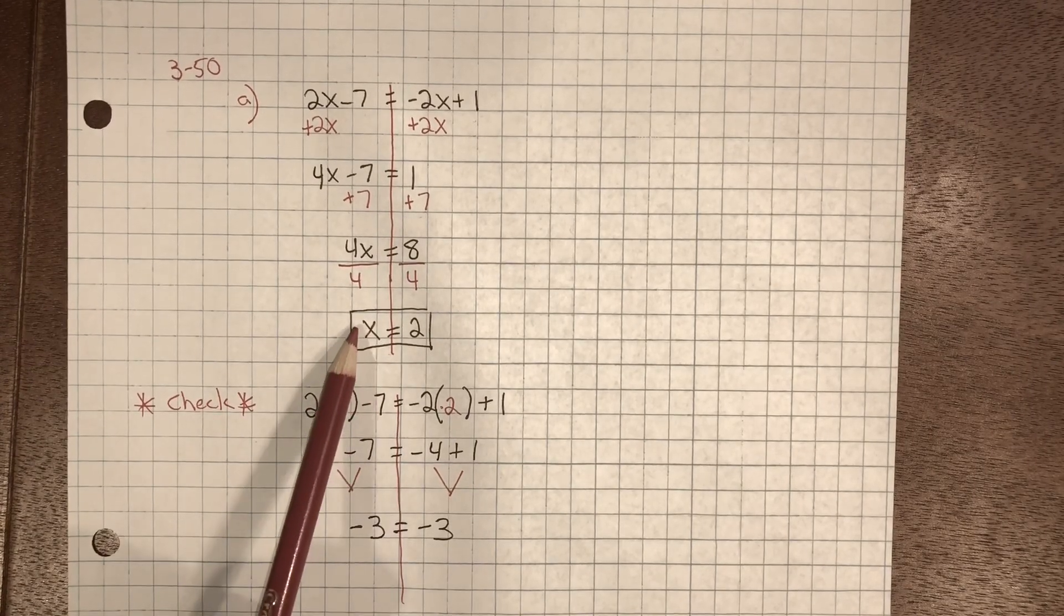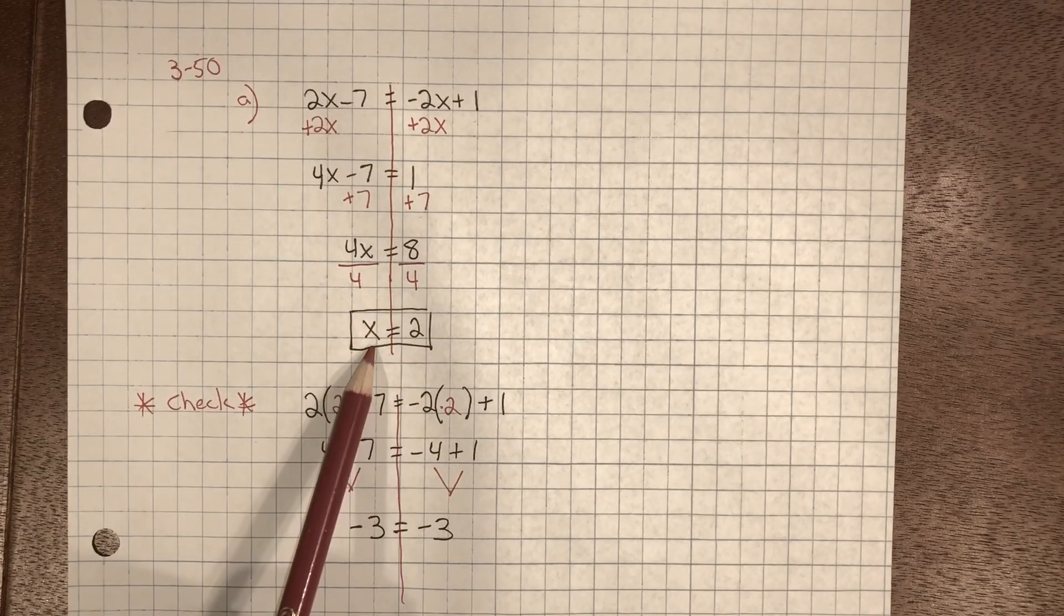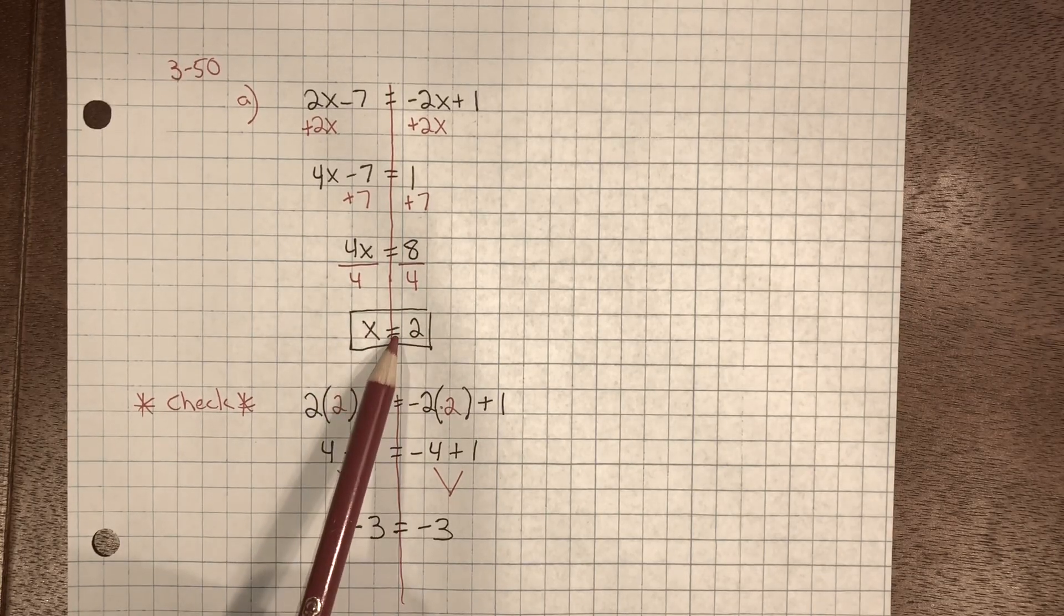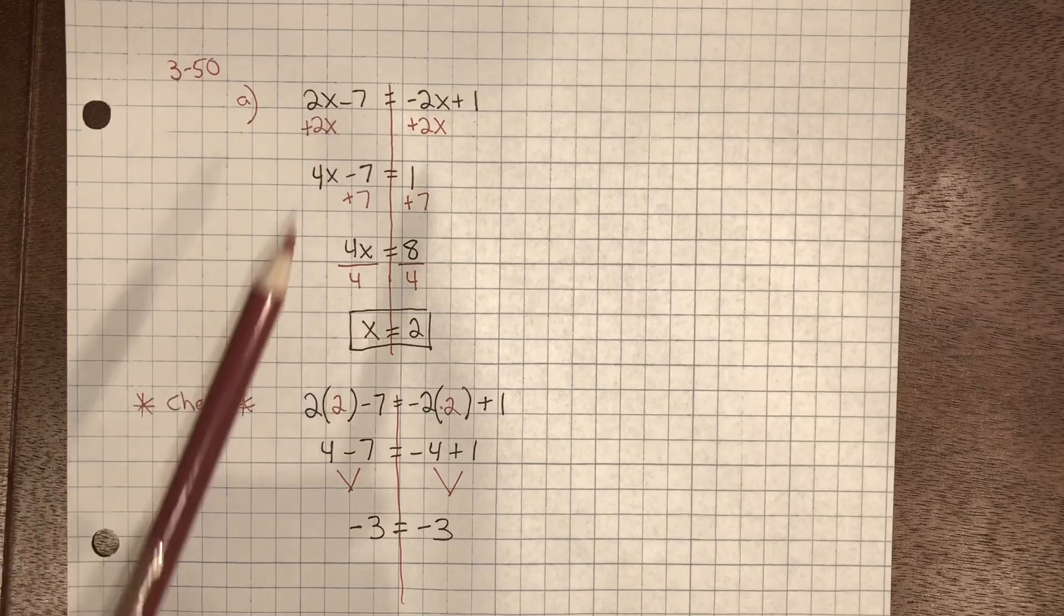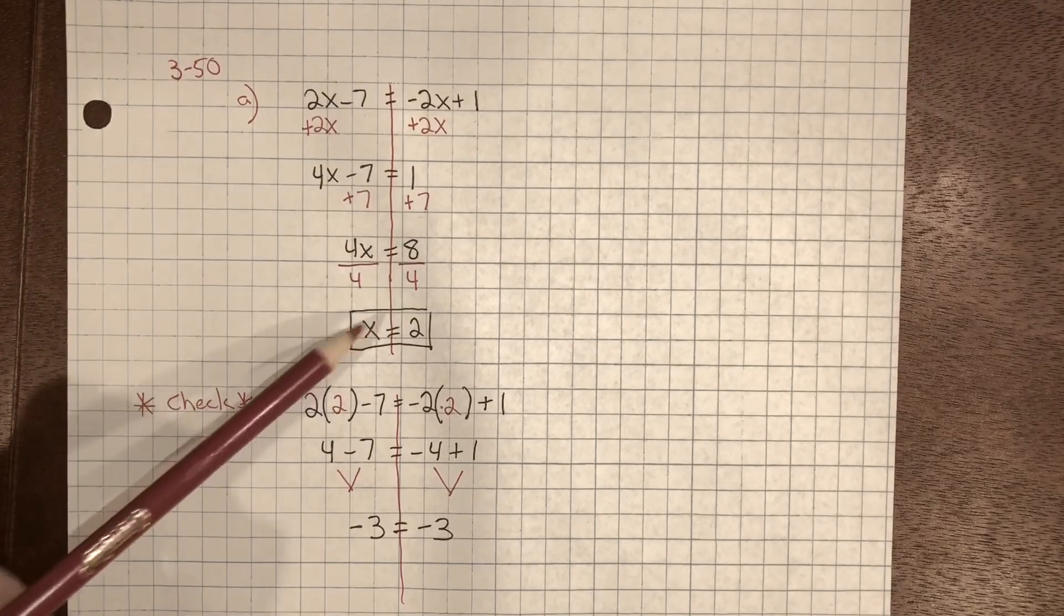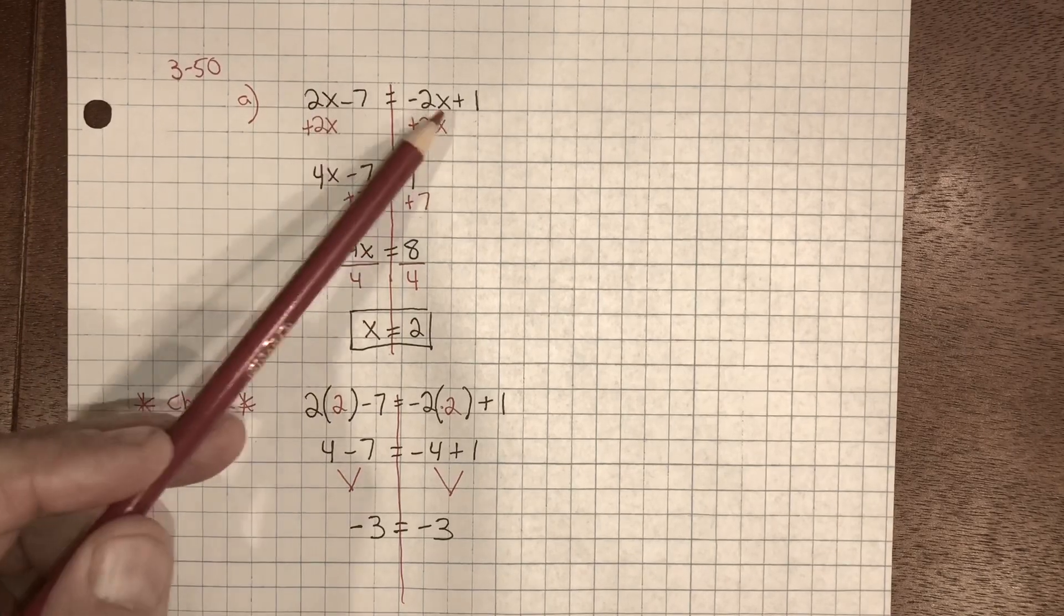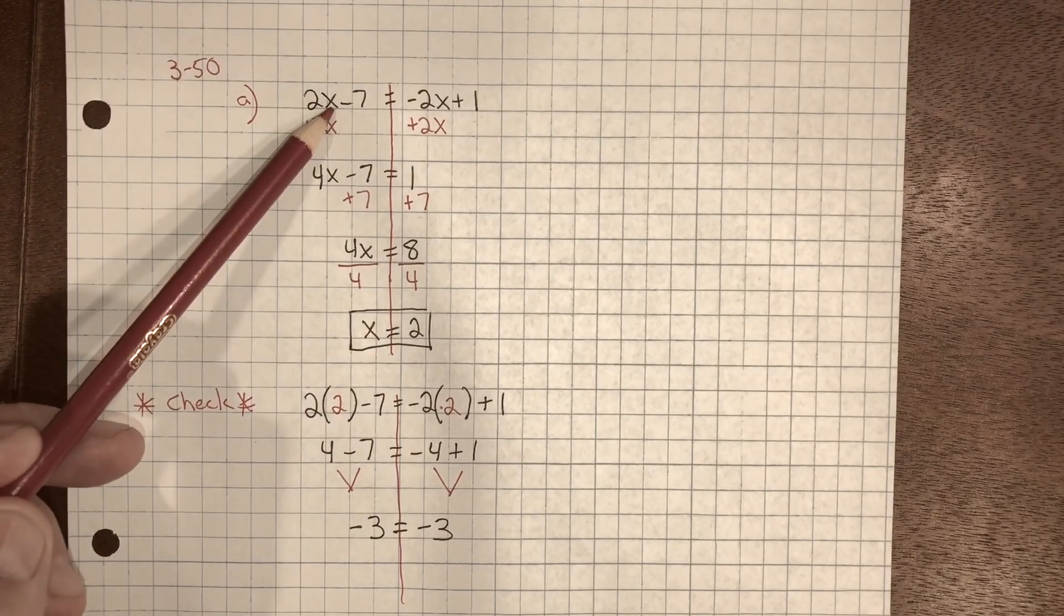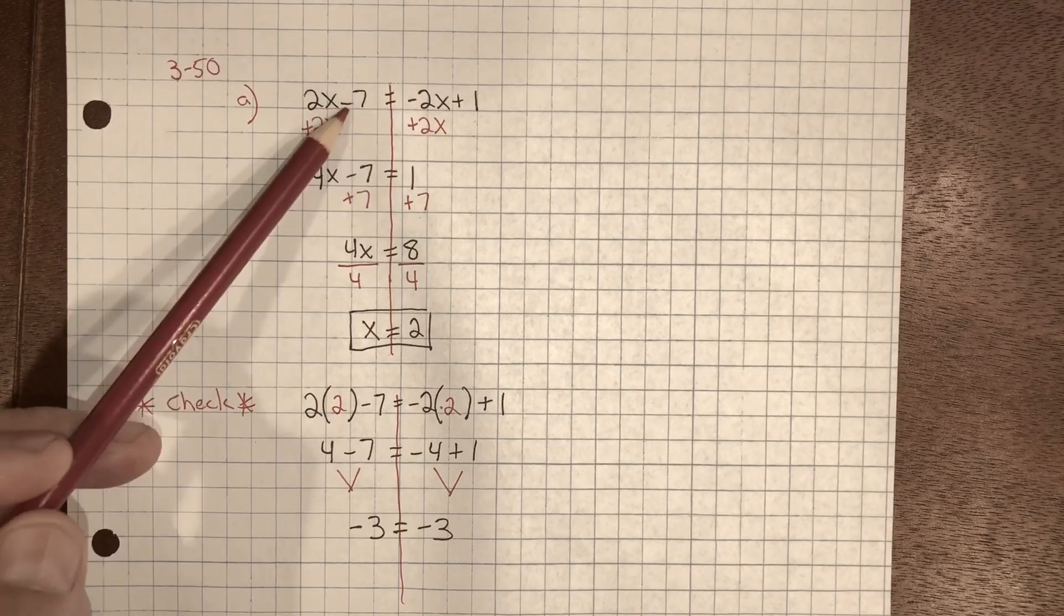When you have an equation, it's always a good idea to substitute your x value back into the equation and check to make sure it's true. Because the left side should equal the right side. So if we know that x equals 2, we could substitute it back on both sides of the equation.